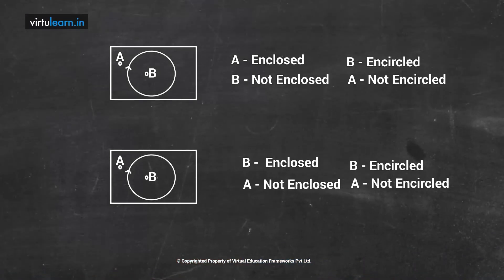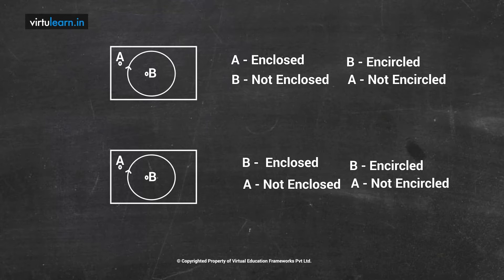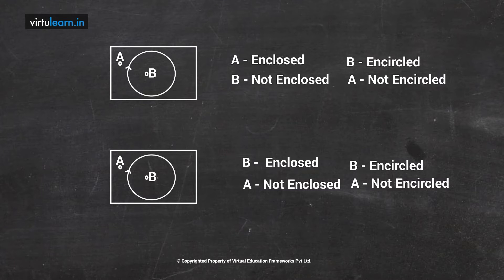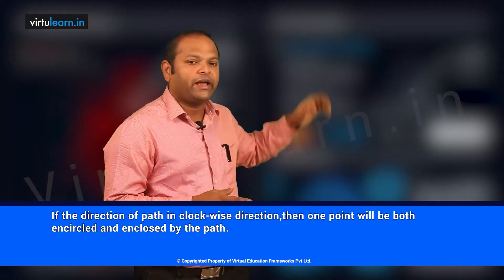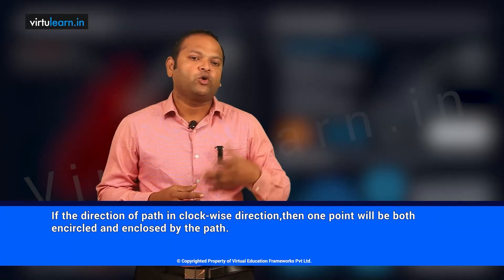Let us look at two examples. Here I have point A and point B, with a closed path drawn in the anticlockwise direction. Point A is enclosed but point B is not enclosed. Point A is not encircled but point B is encircled. In the second case, if the direction is clockwise, then point A is not enclosed, point B is enclosed, point A is not encircled, and point B is encircled.